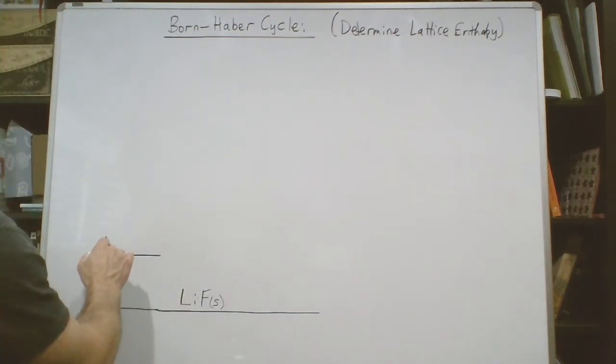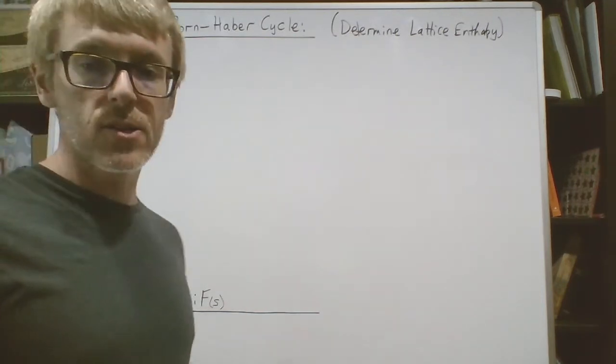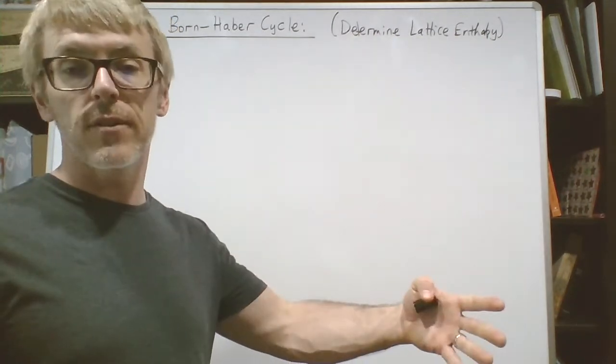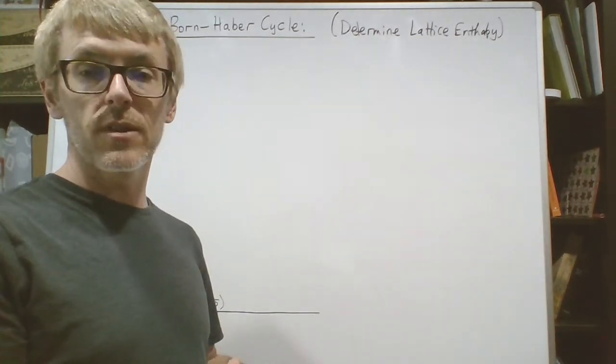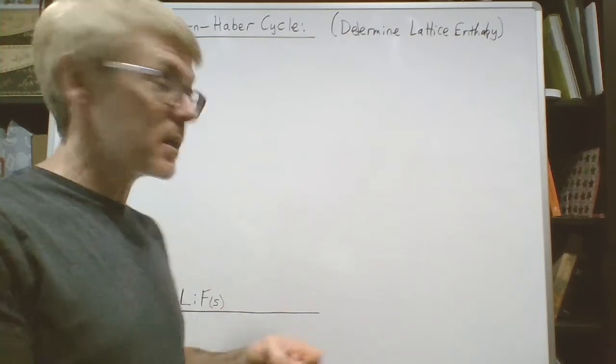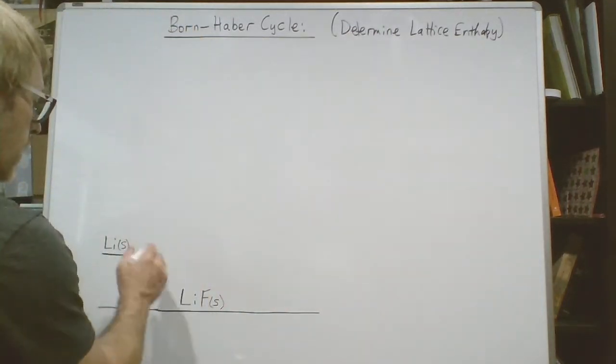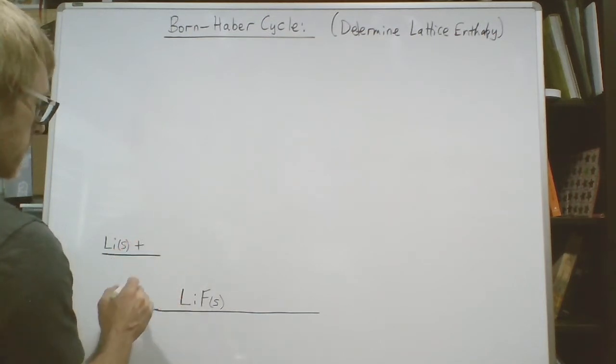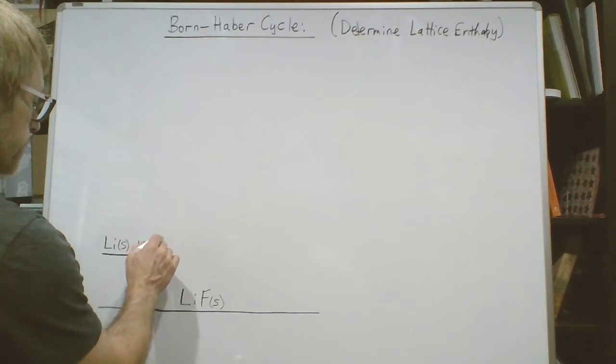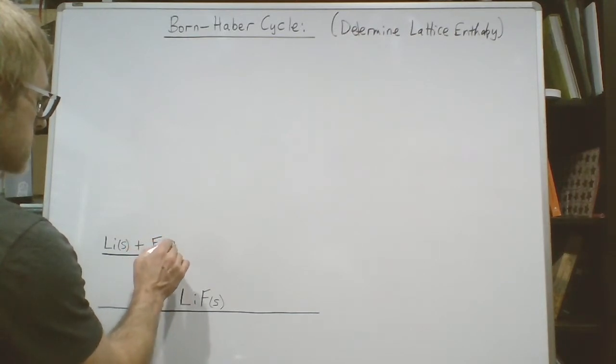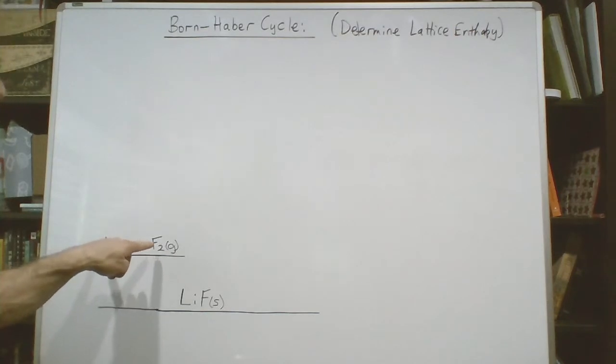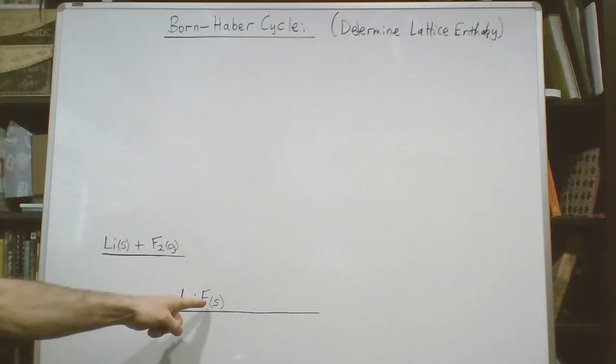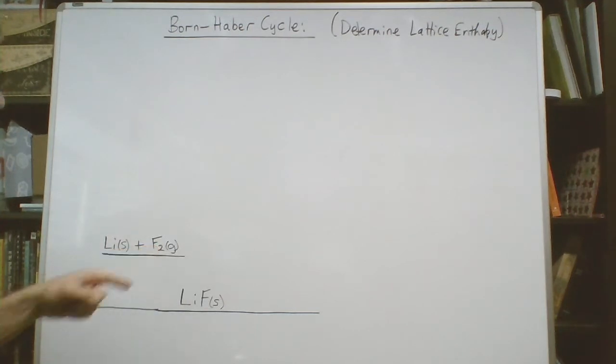First thing I want to do is separate the ionic compound into its elements in the standard state. I know that lithium is naturally a solid because lithium is a metal and metals under standard conditions, where standard just means 25 degrees Celsius, are going to be a solid. Now fluoride isn't naturally F, it's naturally F2. It's a diatomic molecule and it's a gas.